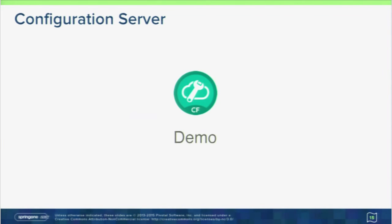Let me show you a demo. We're running this on an internal Pivotal Cloud Foundry environment rather than public Pivotal Web Services, so I'm logged into a VPN — conference Wi-Fi plus VPN, what could possibly go wrong? I'll work through a mocked-up scenario first. I'm logged into Cloud Foundry in my org. I already added a config server, let me delete it so you can see the full experience.